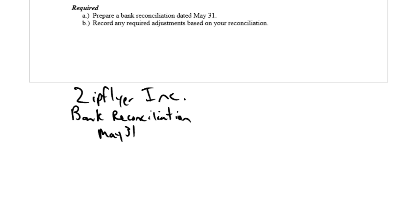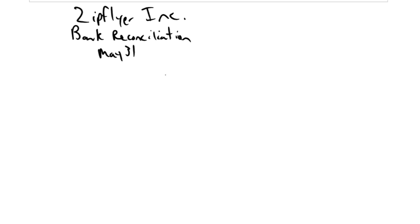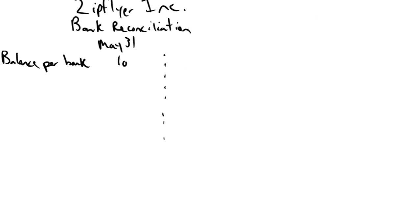The bank reconciliation is a little bit like a balance sheet in that it's got two halves that we're trying to balance. On the left, we say here's what the bank thinks our cash is, and here's why the bank's wrong. So we'll start with our balance per bank — meaning the balance according to the bank statement — which was $16,707. So let's fill that in.